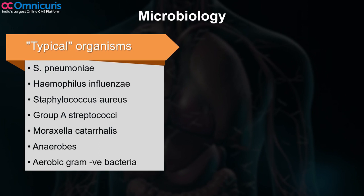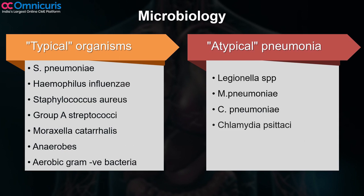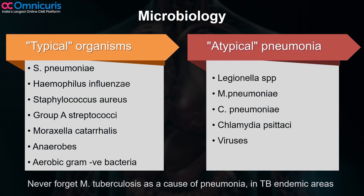The common organisms that cause atypical pneumonia are Legionella species, Mycoplasma pneumoniae, Chlamydia pneumoniae, Chlamydia psittaci, and viruses. We should never forget Mycobacterium tuberculosis as a cause of pneumonia.